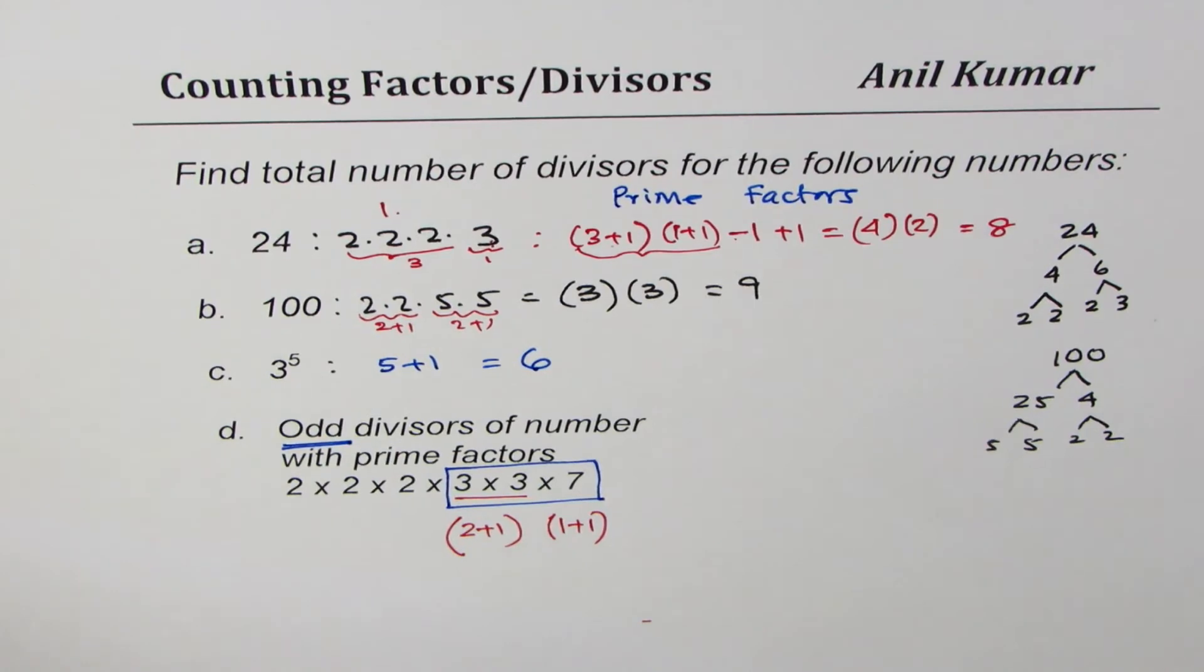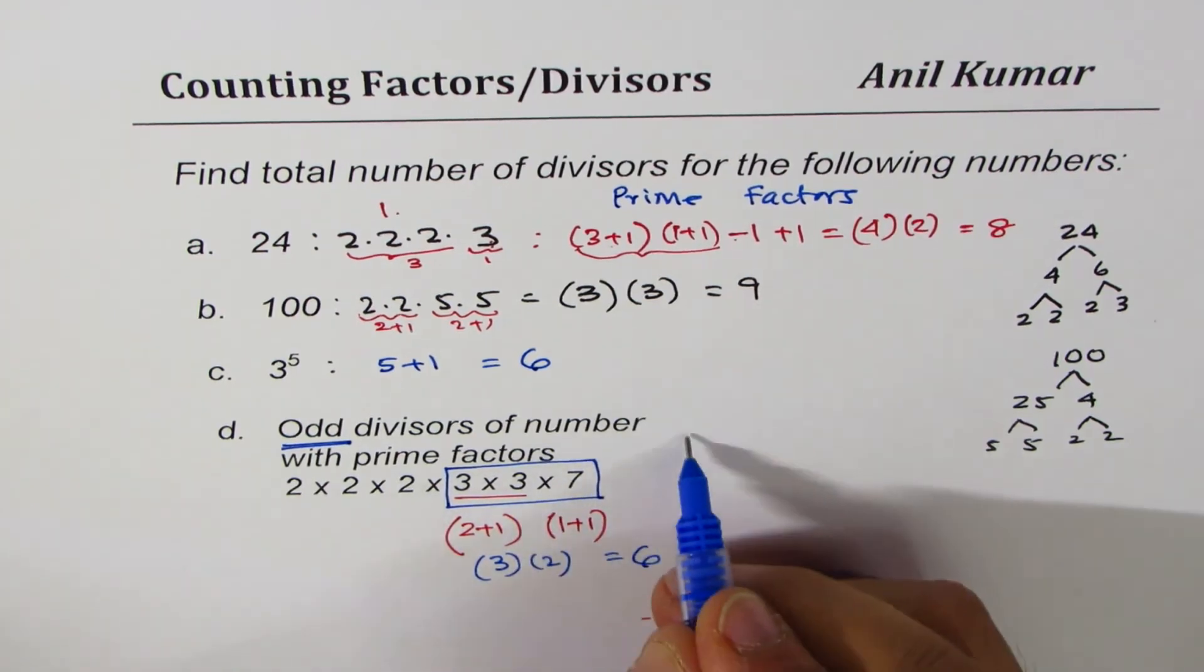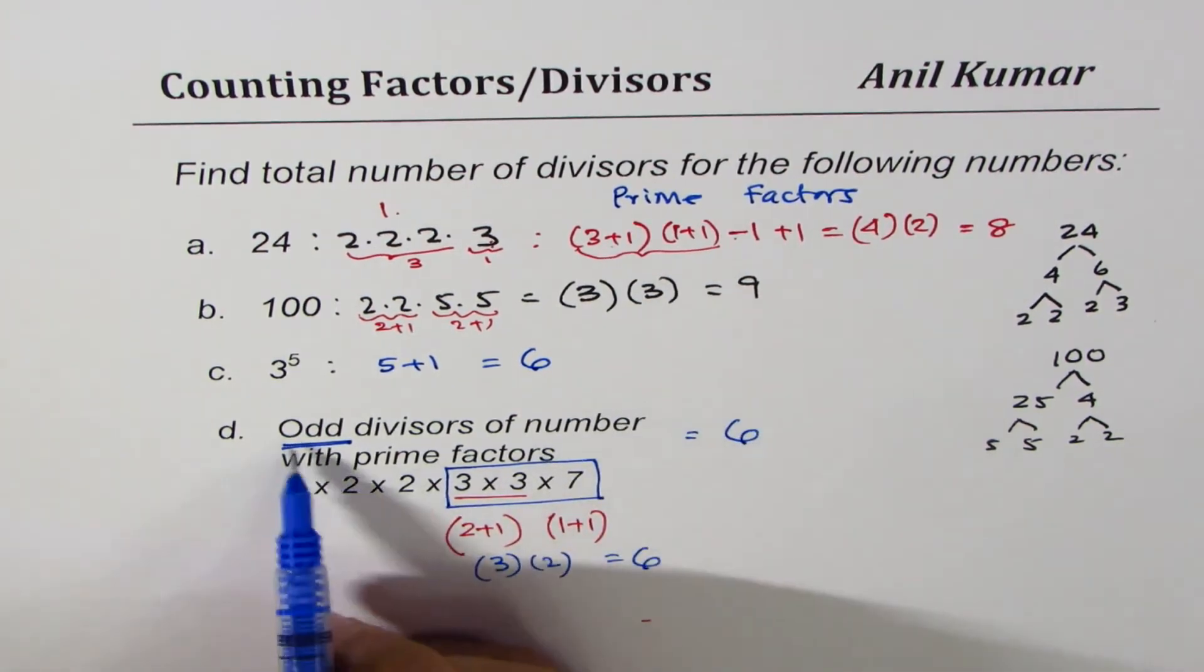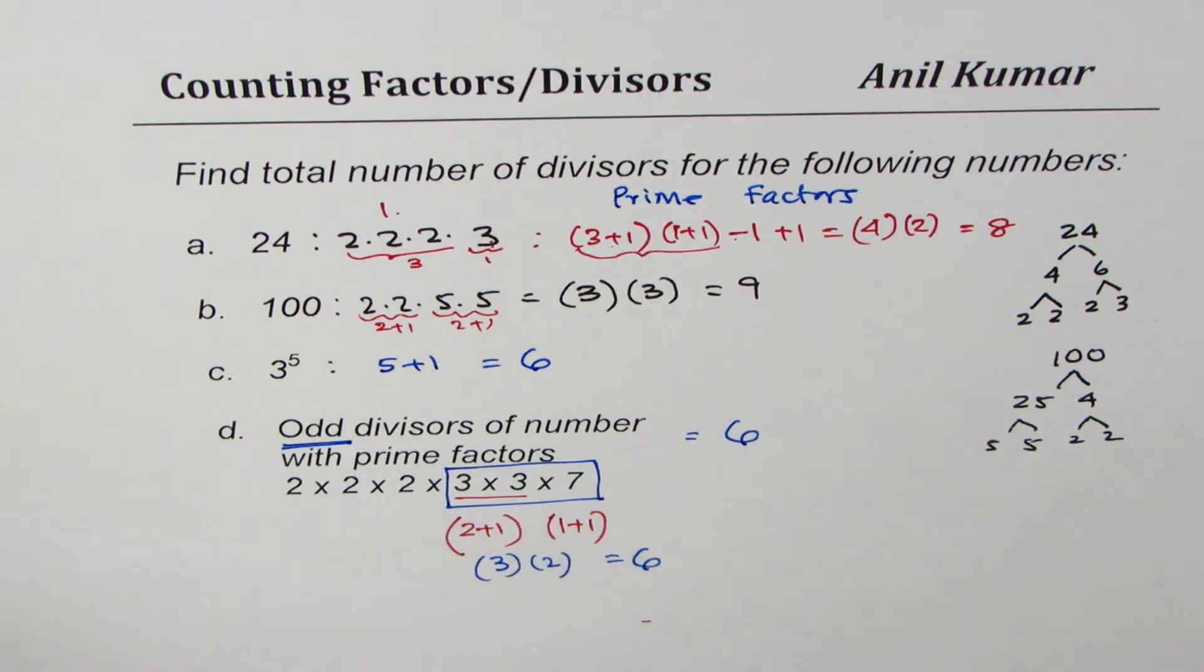And that is 3 times 2, so the answer is 6. So the answer for this is 6 odd divisors of a number whose prime factors are given to us. I hope this method efficiently provides you with the answer and I hope you like it.